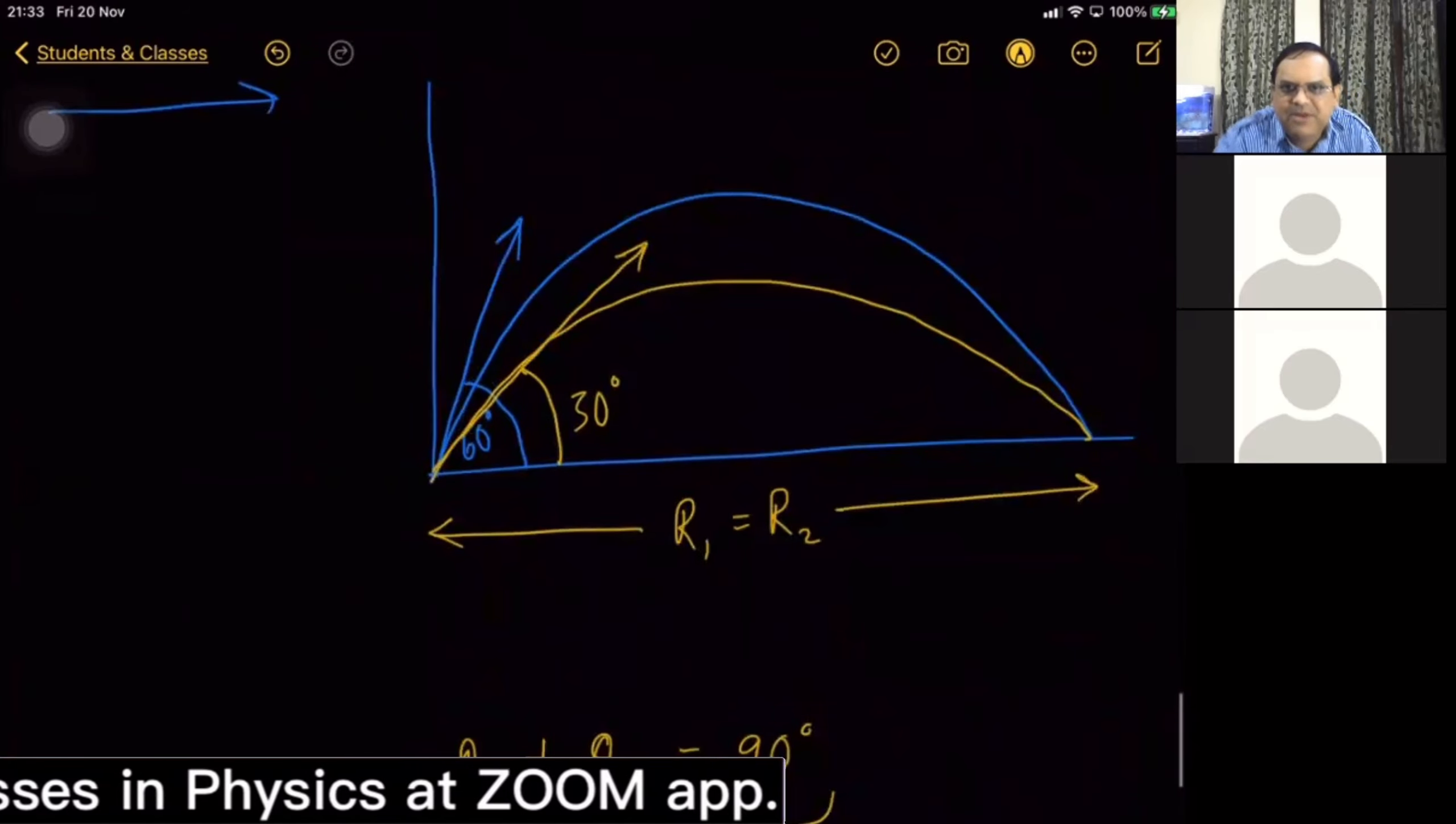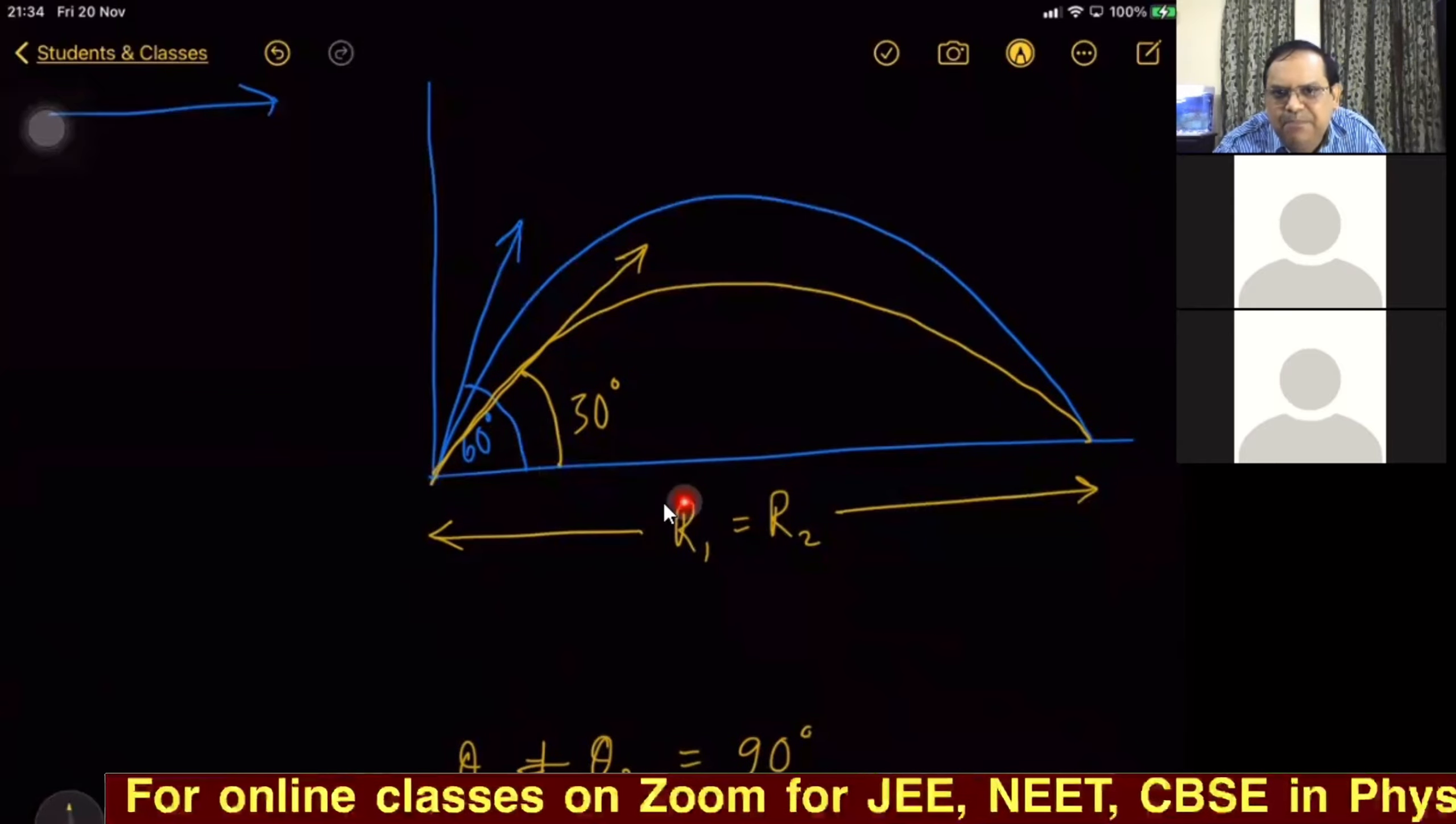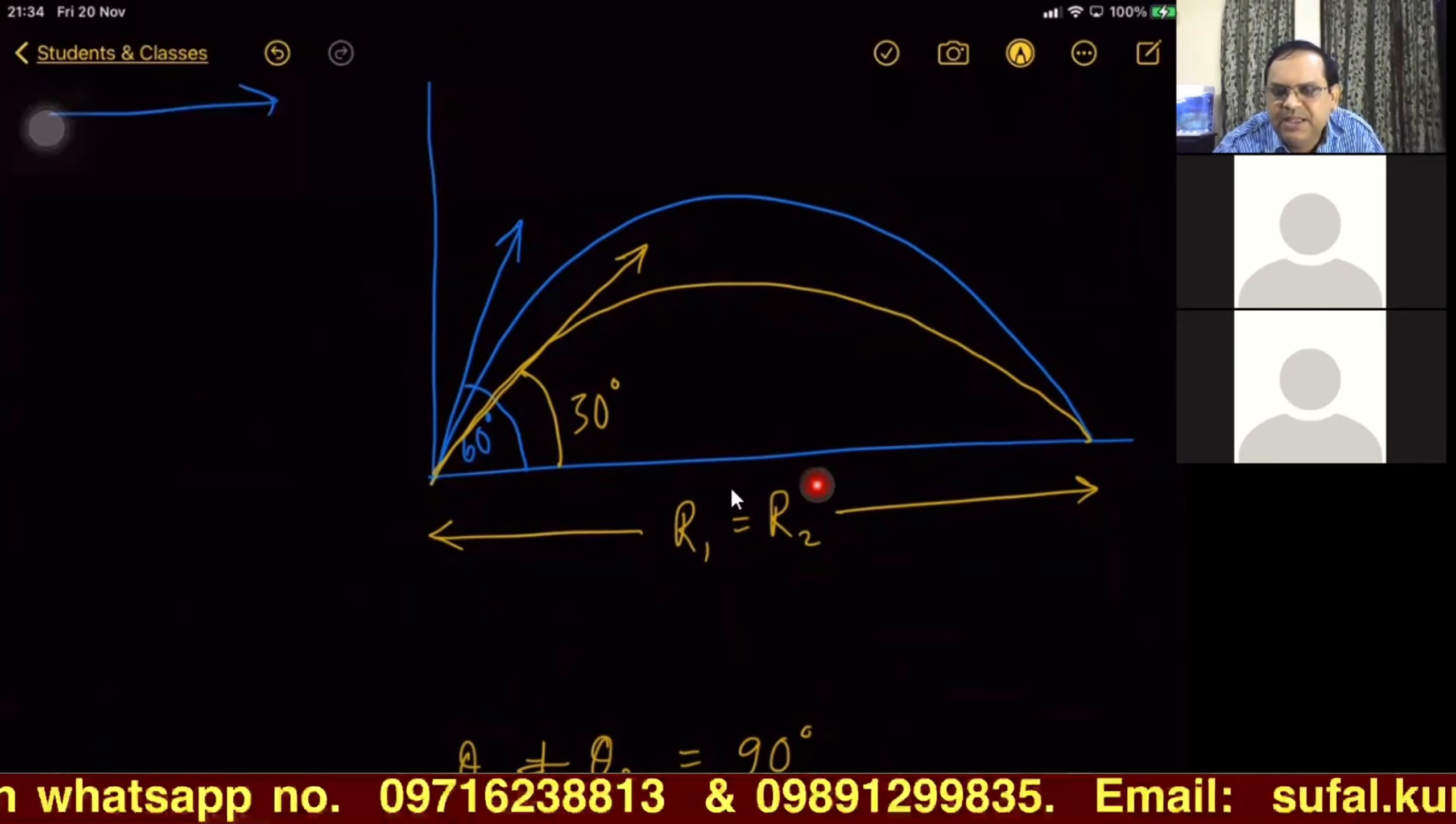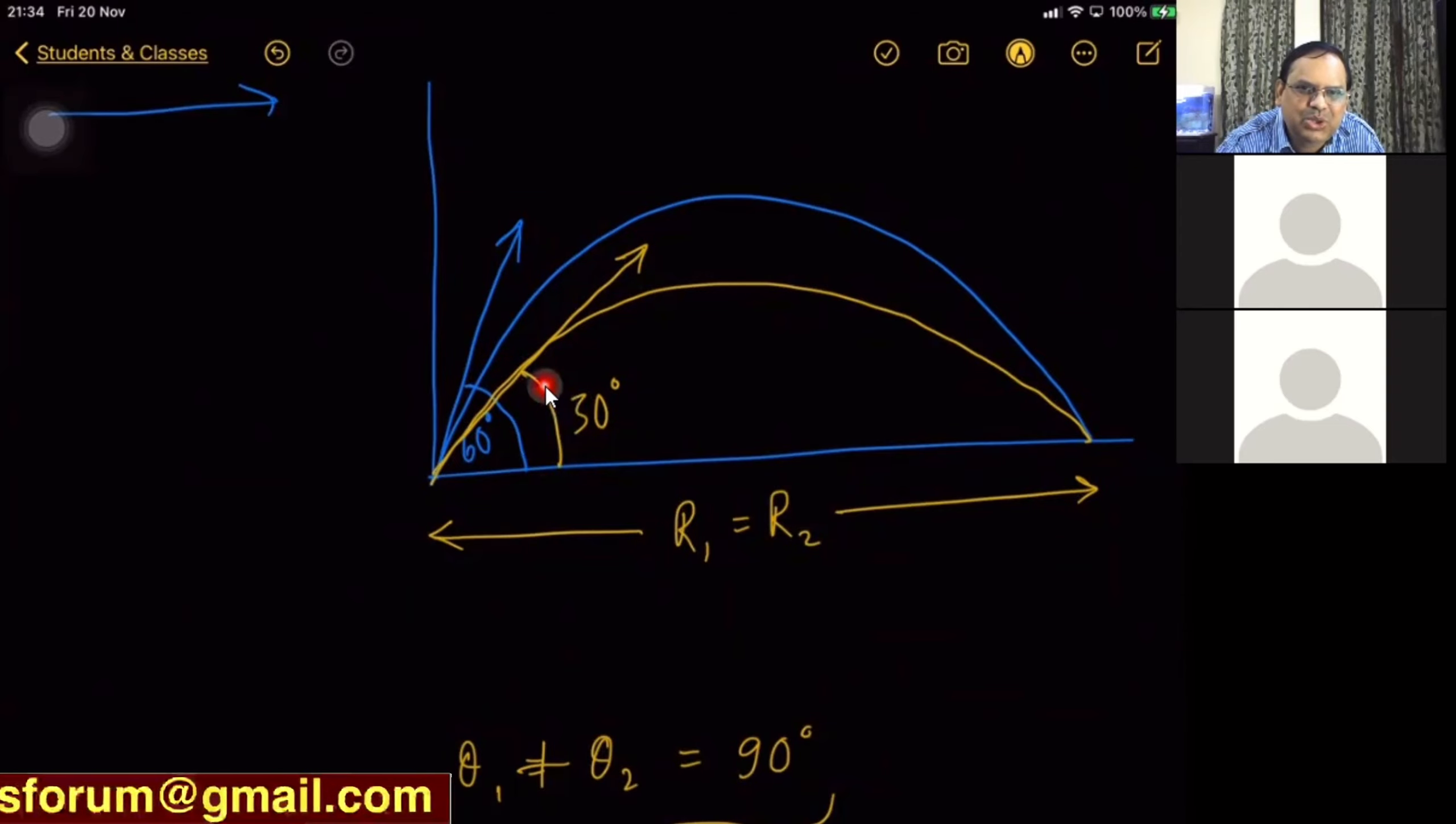Complementary set of angles. Were you aware? Yes, good, very good. So now you could understand my point, yes sir. Because see, in first situation projectile covered R1 range by making angle of projection 60°, and in second situation again particle covered that yellow line, yellow curve you see. This was R2, and corresponding angle of projection is 30°.